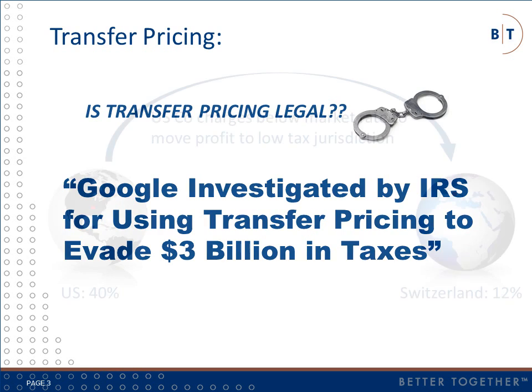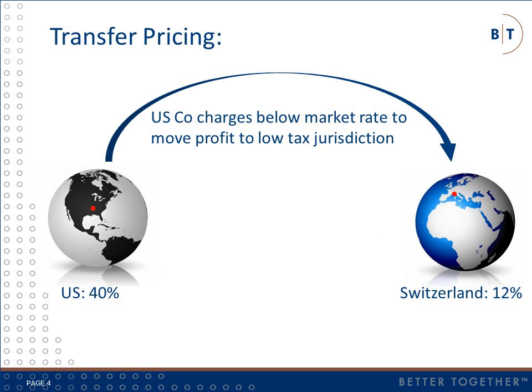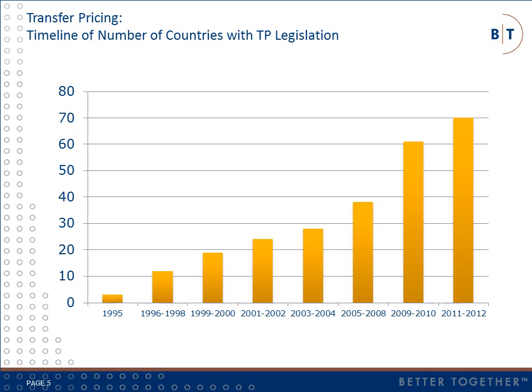Why? Because tax authorities suspect that companies use transfer pricing to shift profits to low tax jurisdictions by failing to charge appropriate prices for intercompany transfers. In this example, if a U.S. parent company can price transactions such that most of the profit ends up in a Swiss subsidiary, it will achieve a reduction in its effective tax rate of 28%. The reduction in tax rate is permanent if U.S. code never repatriates Swiss profits. Currently, more than 70 countries have enacted transfer pricing laws to protect their tax bases.